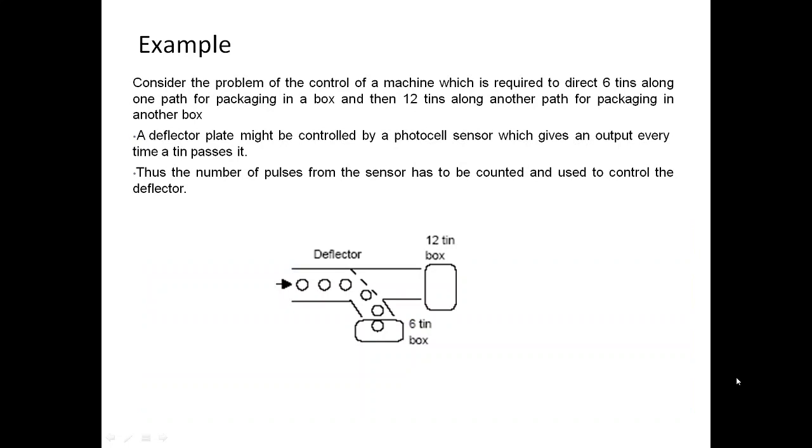For example, consider the problem of control of a machine which is required to direct 6 tins along one path for packing in a box and 12 tins along another path for packing in another box. A deflector plate may be controlled by a photocell which gives an output every time a tin passes it. Thus the number of pulses from the sensor has to be counted and used to control the deflector.